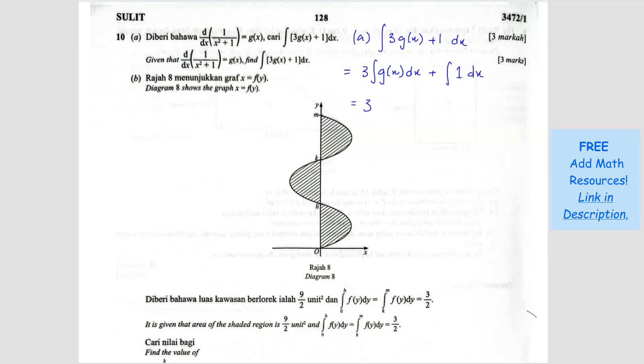So what you will get is 3 times, so when you integrate g(x) you should get back 1 over x squared plus 1. Because if you differentiate 1 over x squared plus 1, you get g(x). Then if you integrate g(x) you should get back the original. Plus, this one becomes 1x, so it's just x, and then plus c. You get 3 over x squared plus 1 plus x plus c.